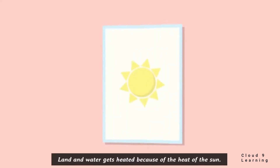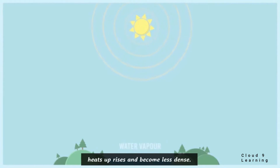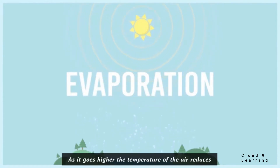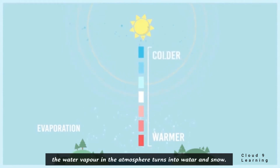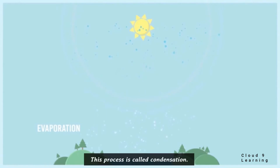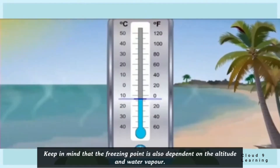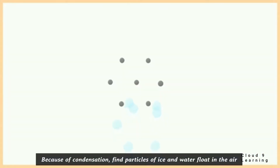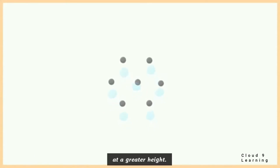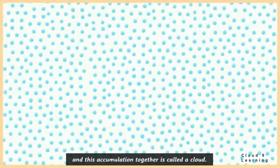Formation of clouds: Land and water get heated because of the heat of the sun. Air near the land surface heats up, rises and becomes less dense. As it goes higher, the temperature of the air reduces and the moisture holding capacity reduces. The water vapor in the atmosphere turns into water and snow — this process is called condensation. Fine particles of ice and water float in the air at greater height, accumulate around dust particles, become larger in size, and this accumulation together is called a cloud.